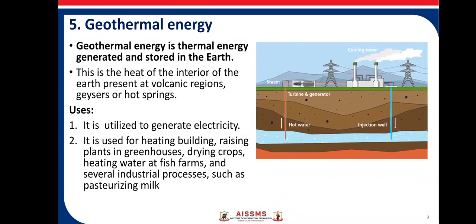The fifth example of renewable source is geothermal energy. Geothermal energy is thermal energy generated and stored in the earth — the heat of the interior of the earth present at volcanic regions, geysers, and hot springs. Uses of geothermal energy: it is utilized to generate electricity, used for heating buildings, raising plants in greenhouses, drying crops, heating water at fish farms, and several industrial processes such as pasteurizing milk.